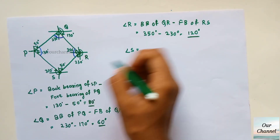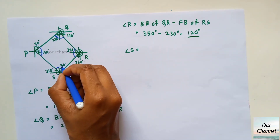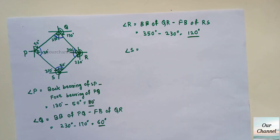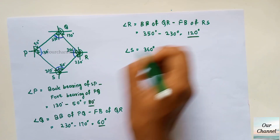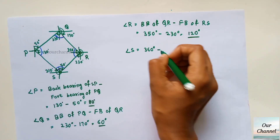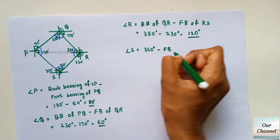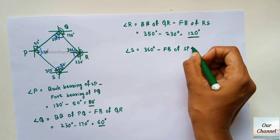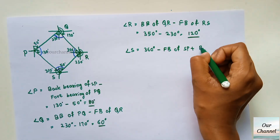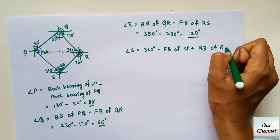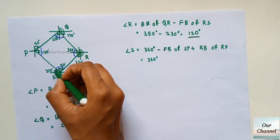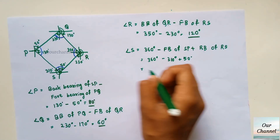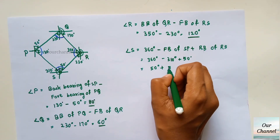Angle S — from the picture we can see that we should subtract 310 degrees from 360 degrees, and then add 50 degrees to get the included angle S. So angle S equals 360 degrees minus the fore bearing of SP, which is 310 degrees, plus 50 degrees, the back bearing of RS. That gives us 50 degrees plus 50 degrees, which equals 100 degrees.